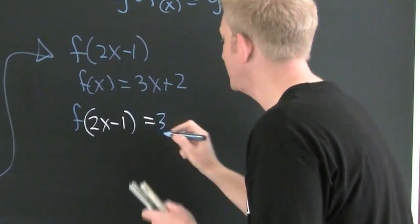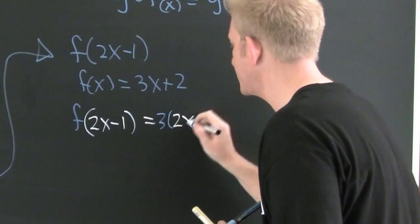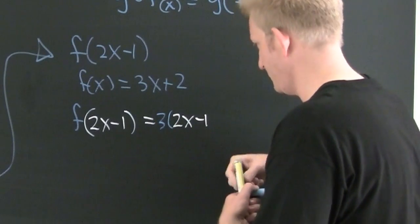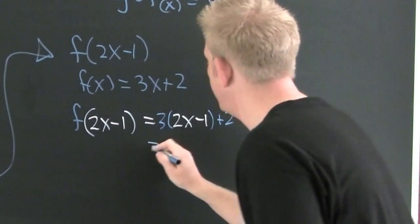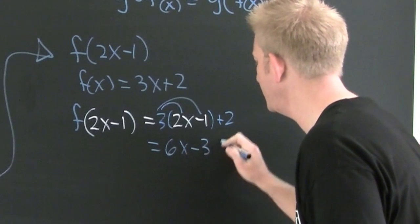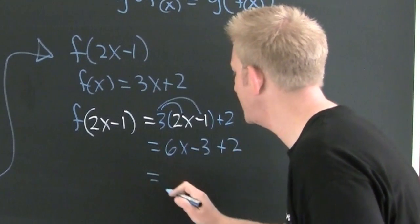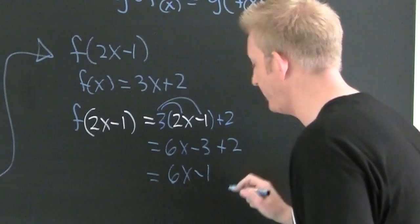3 times 2x minus 1 plus 2. 6x minus 3 plus 2. Almost done. This is going to be 6x minus 1.